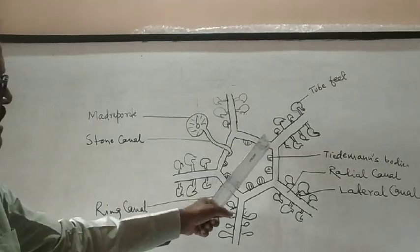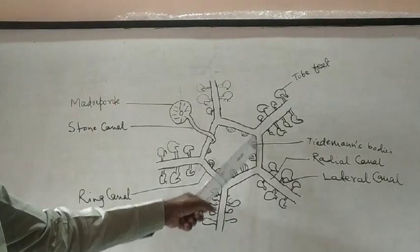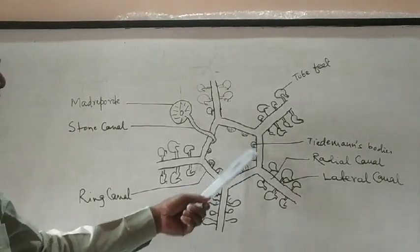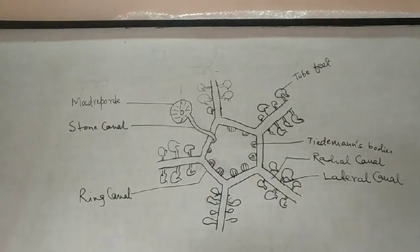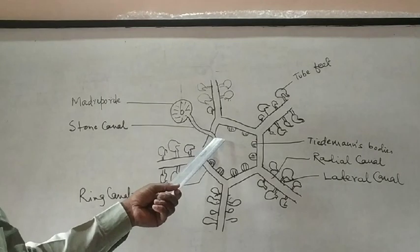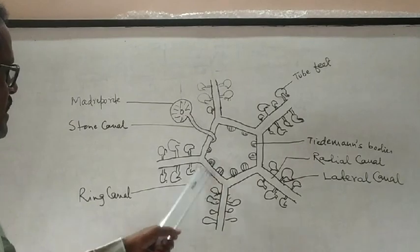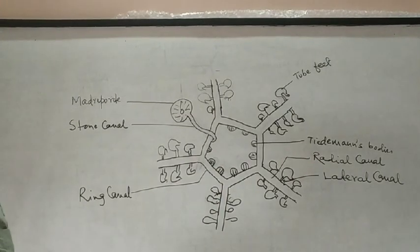And this ring canal also consists of some Tiedemann's bodies. Each in every radius and inter-radius direction, there are two Tiedemann's bodies. But actually, where the stone canal has opened, there is single Tiedemann's body. So, altogether there are total nine Tiedemann's bodies.